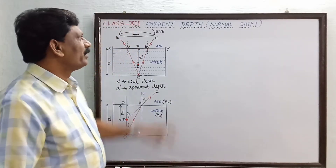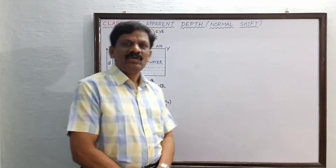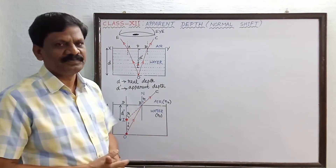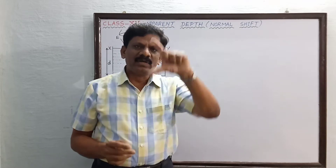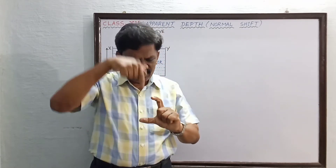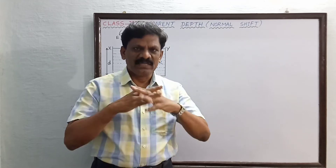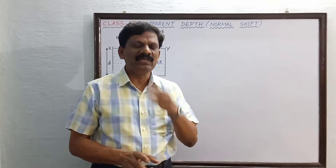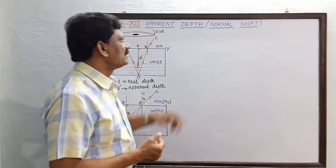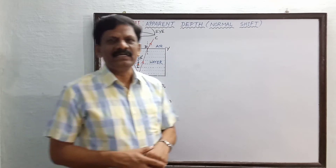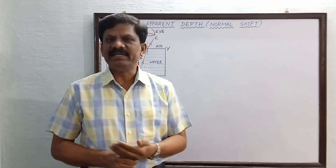Today our topic of discussion is an expression for apparent depth or normal shift when light travels from a denser medium into a rarer medium. Take a glass tumbler and put a lemon inside it, look at the level of the lemon from vertically upwards, then pour some water into the tumbler and view from the top — you can see the elevated position of the lemon. You can also try this with a coin. This elevation is because of normal shift, so apparent depth depends on normal shift.